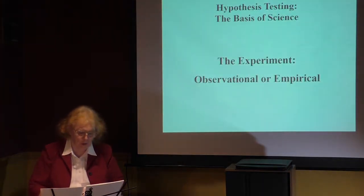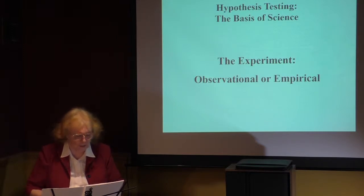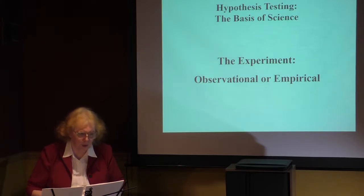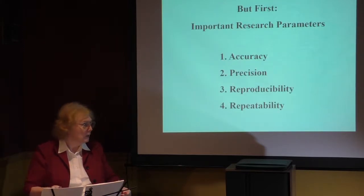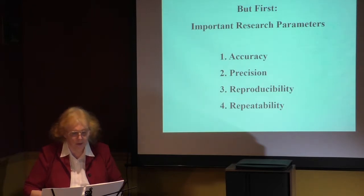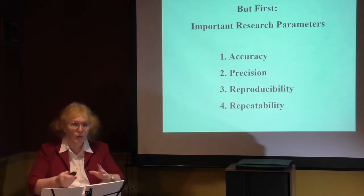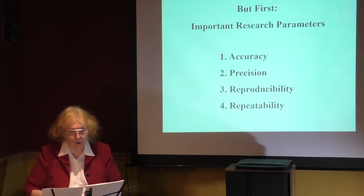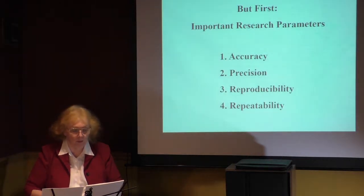Let's consider the experiment — whether it's observational or empirical — the experiment we're going to perform must have four properties. These four properties are accuracy, precision, reproducibility, and repeatability. These are four things we always see. You may use some of these words interchangeably, but we in the sciences do not. These are sacrosanct — we know exactly what we're saying when we say these things.